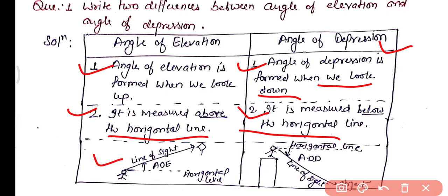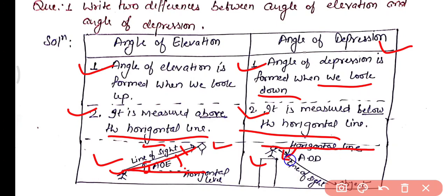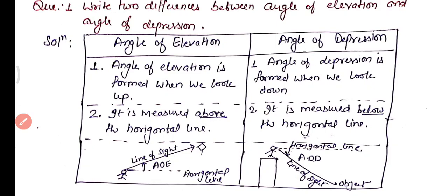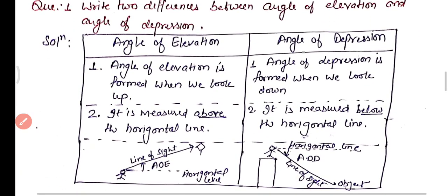As you can see in the figure, the horizontal line and the line of sight make the angle. When you look up, the angle between the line of sight and the horizontal line is the angle of elevation, known as AOE. Similarly, when you are at the top of a tower and look down, the angle between the line of sight and the horizontal line is the angle of depression. This completes question number one.